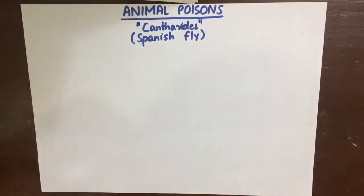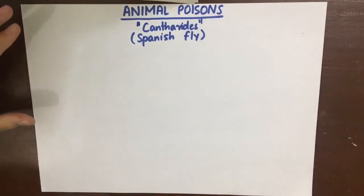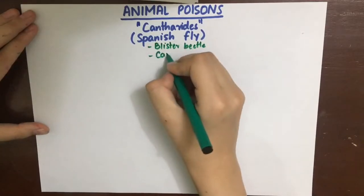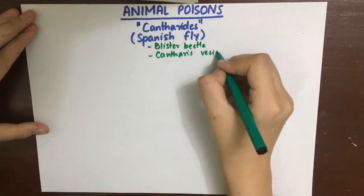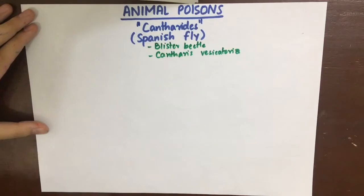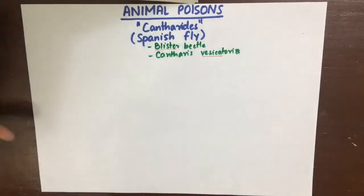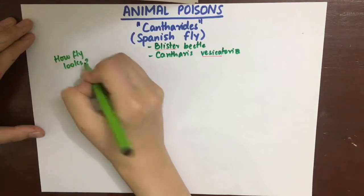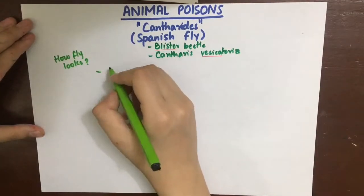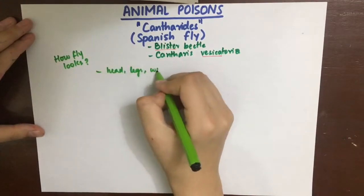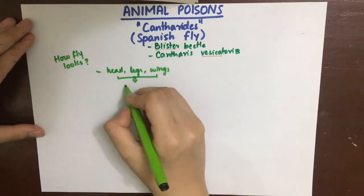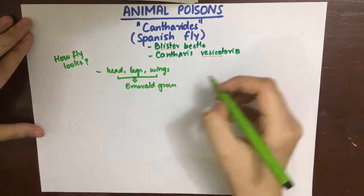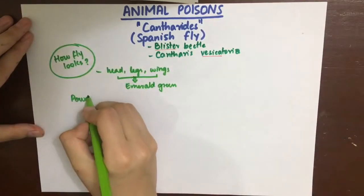The first animal poison we'll be studying is Cantharides, or Spanish fly. It's an emerald green colored beetle, also known as blister beetle because its powder, when administered locally, causes vesication and blister formation. For the same reason it is also known as Cantharis vesicatoria. It is a very beautiful emerald green colored fly and its wings are shiny, so when made into a powder, the powder contains shining green particles.